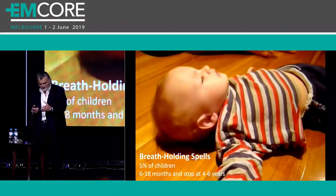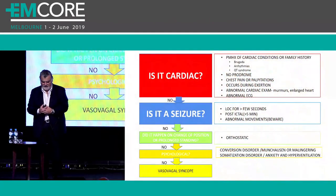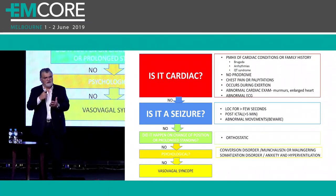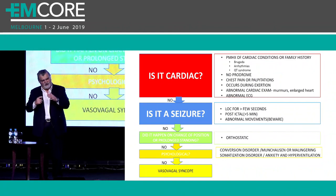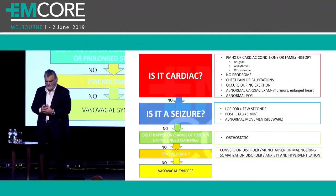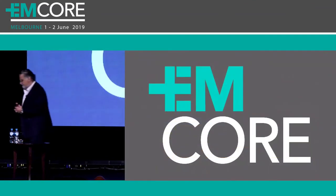So think about syncope in kids: it's very similar to how we approach adults. Cardiac causes are the big causes to consider first; then think of neurological causes; then all the other things that might be responsible. There's a simple algorithm to assist you and having a plan means we don't miss anything. Thank you very much.